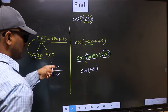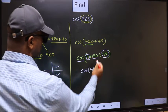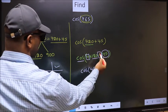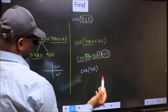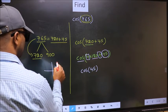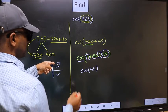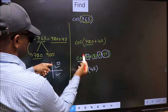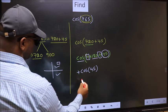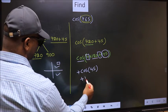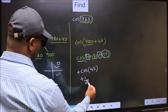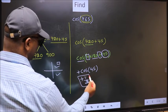Now to select the quadrant, we should look at this symbol. Here we have plus, that means the angle lies in the first quadrant. And in the first quadrant, cos is positive, so we should put plus. Plus cos 45 is 1 by root 2. This is our answer.